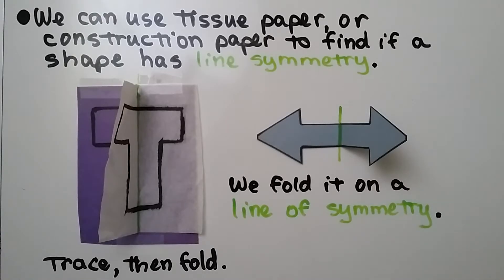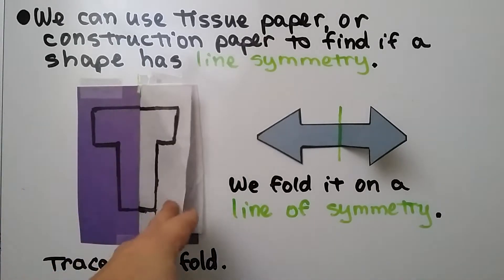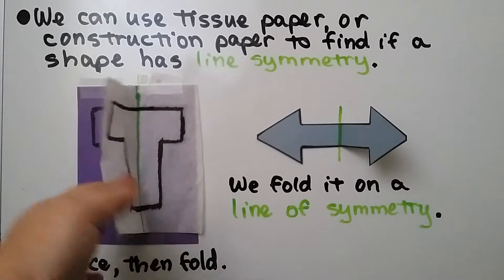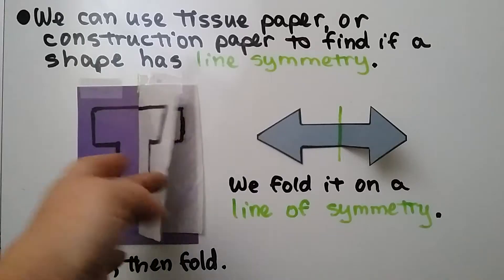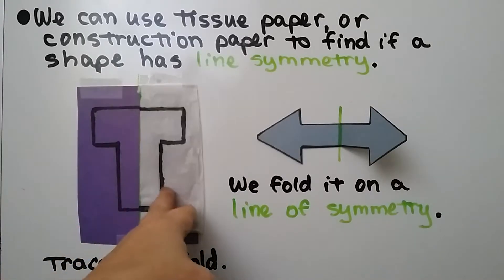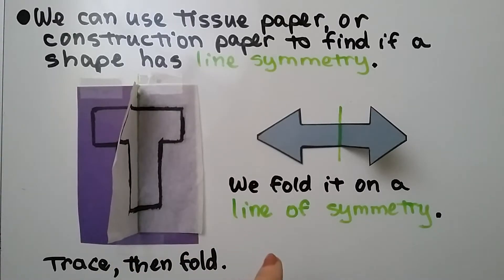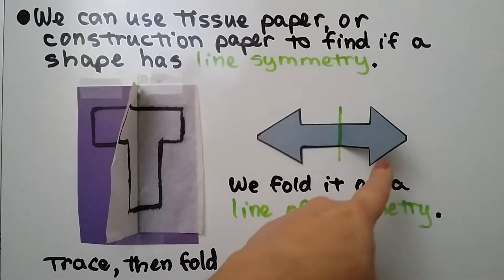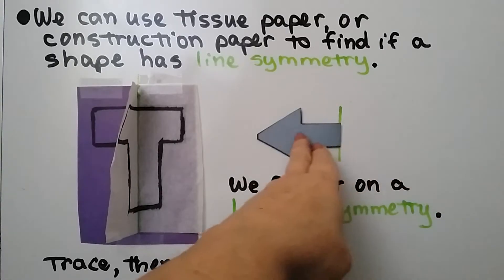We can use tissue paper or construction paper to find if a shape has line symmetry. We can trace the shape — here we have a shape on our blue construction paper. We can trace it with tissue paper because we can see through it, then fold it over on a line of symmetry and see that it matches perfectly. For construction paper, we can just fold it on a line of symmetry and see that it lines up perfectly.